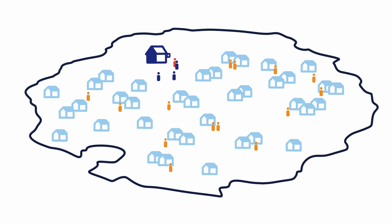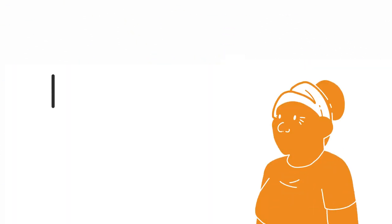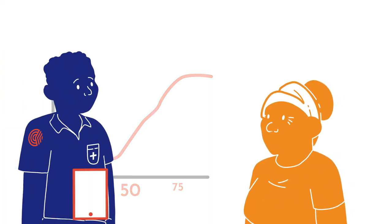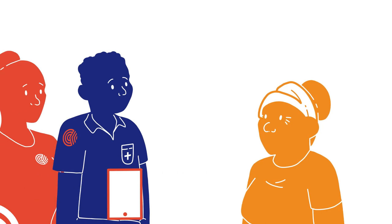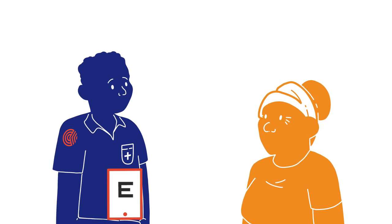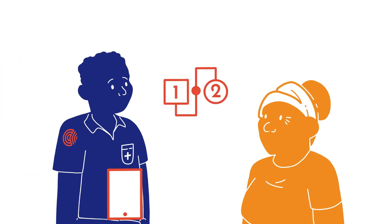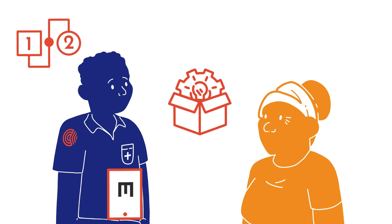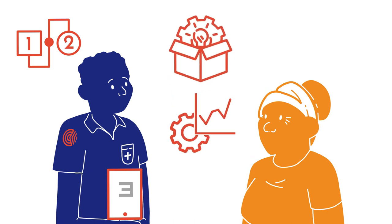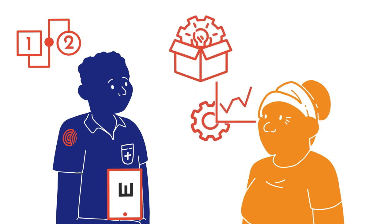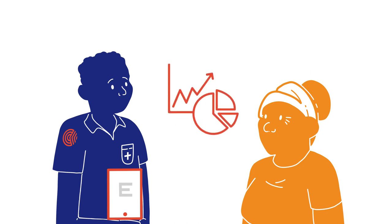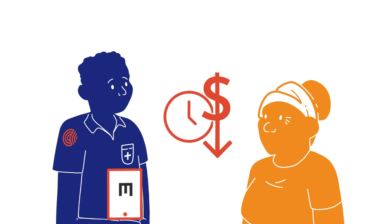RAAB examines people aged 50 and over, where the prevalence of poor vision is highest, and is supported by RAAB trainers. Its simple protocol, pre-packaged training resources, specially built software and automated analysis produces high quality data while keeping the time and cost to complete a survey to a minimum.